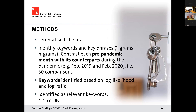We use a bottom-up approach, in contrast to most research where researchers use a top-down approach — defining certain keywords they think are relevant, such as COVID, coronavirus, or vaccination, and then searching the data for articles containing those keywords. In our bottom-up approach, we first lemmatise all the data, then contrast each pre-pandemic month from 2019 with its counterpart during the pandemic — for example, February 2019 with February 2020, 2021, and so on.